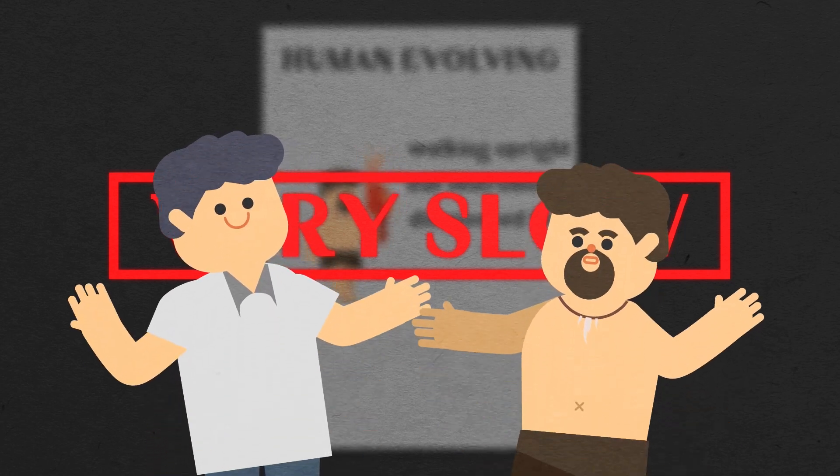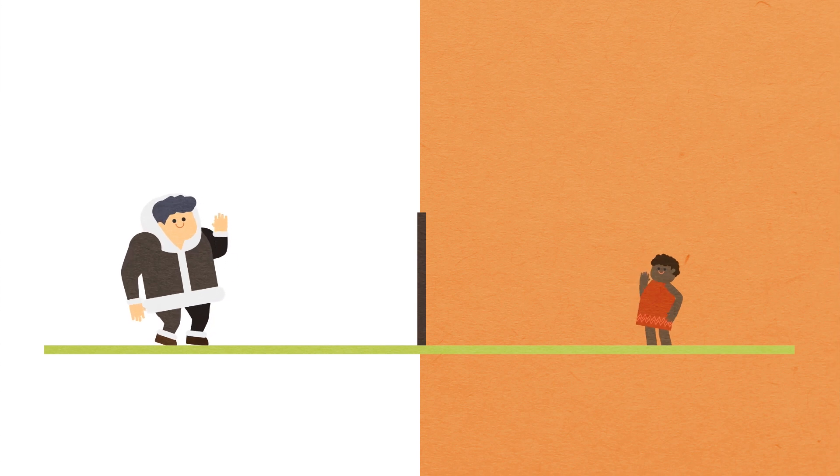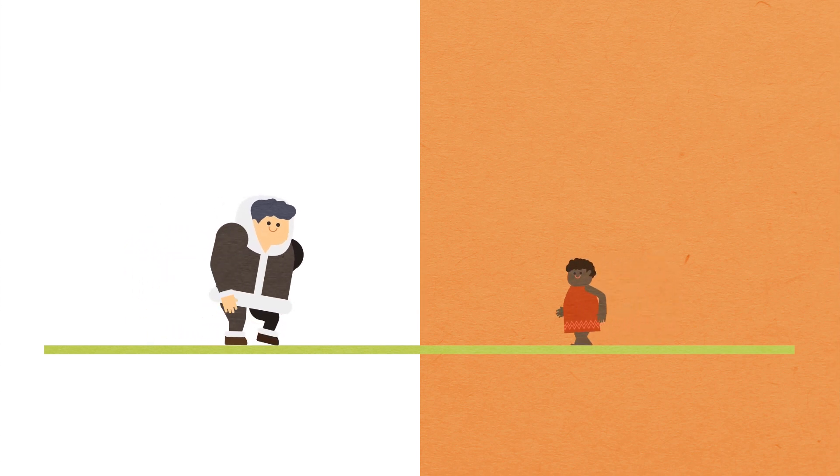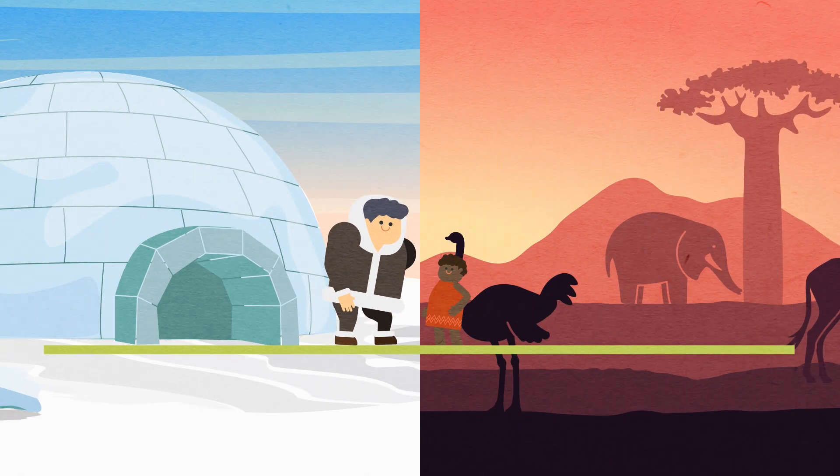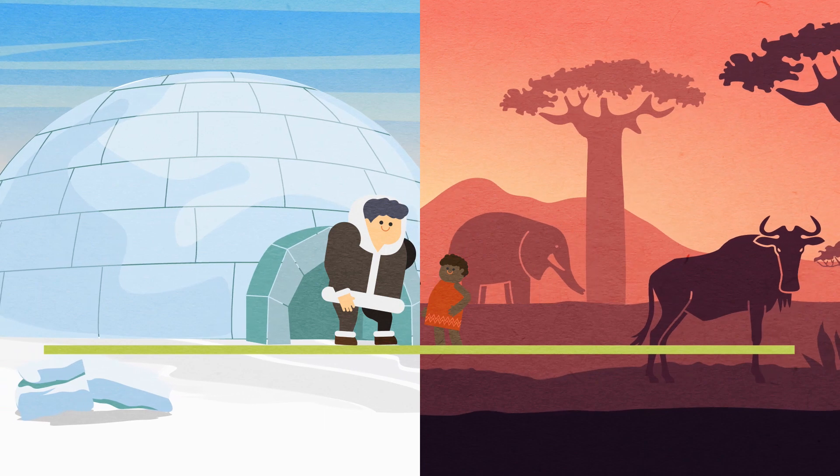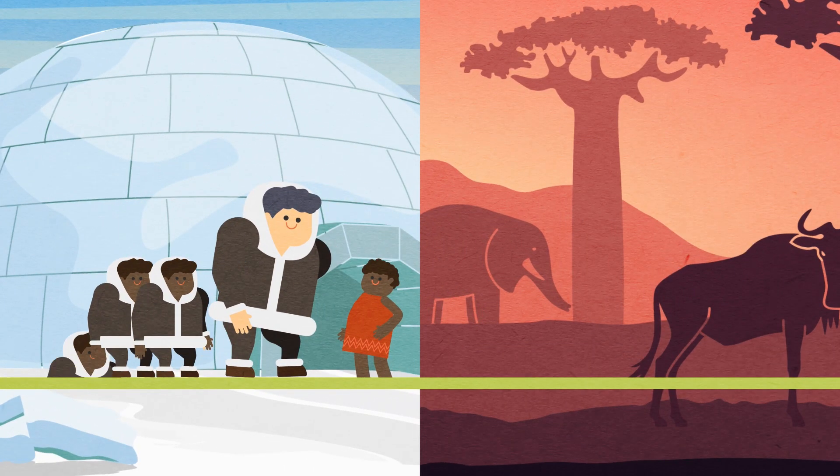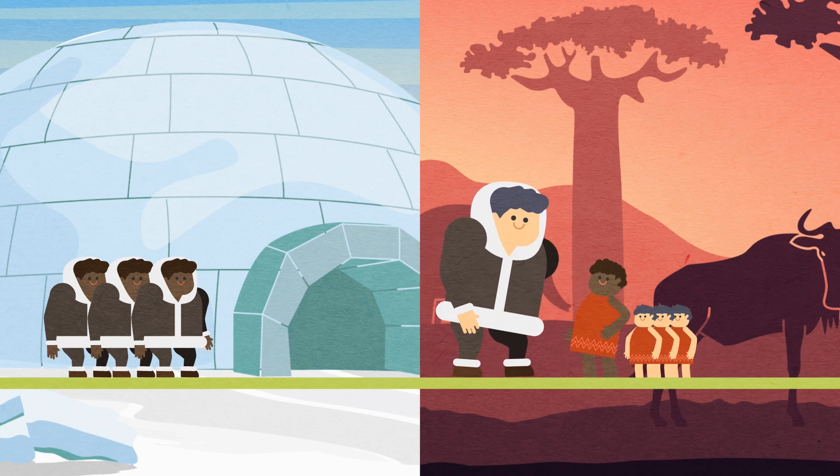So why did the human evolutionary process slow down? Scientists suggest that the first reason is that humans are no longer isolated. In the past, when humans lived in small groups, they were able to evolve in unique ways appropriate for the environment of each region. But now, genes from different regions can continually mix as humans travel around the world.